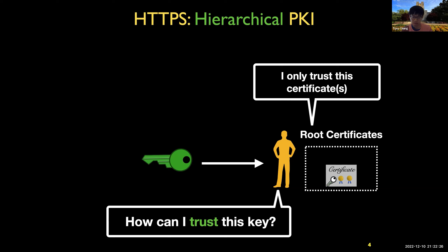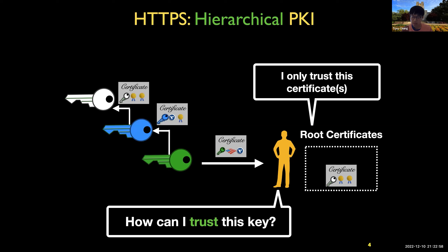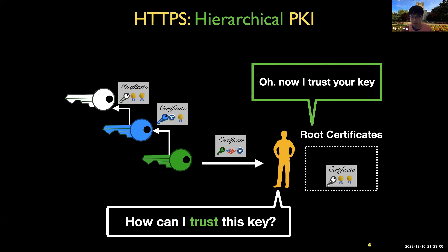For example, if you go to example.com using HTTPS, the web server gives you a certificate claiming to be example.com. The certificate contains the public key, which is not directly in your root store — so you must verify whether this certificate is ultimately signed by one of the public keys in your root store. After this chain-of-trust validation process is done, you can verify that the website is authentic.